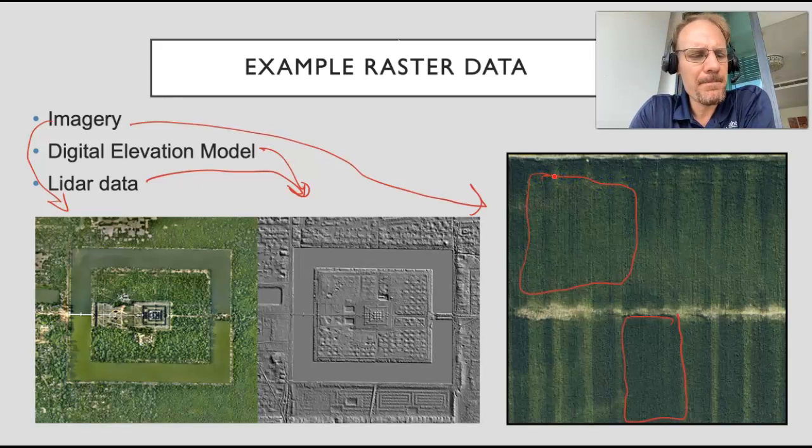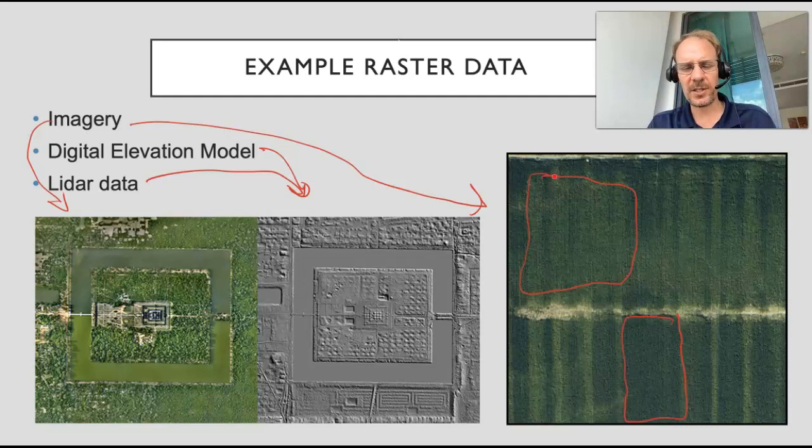Satellite images and pictures that we take with drones - these are examples of raster data and we can use these in a GIS to help us make decisions about agriculture. Taking a picture with a drone, we can look at the data in there and we can identify areas that are low in nutrition or high in nutrition.